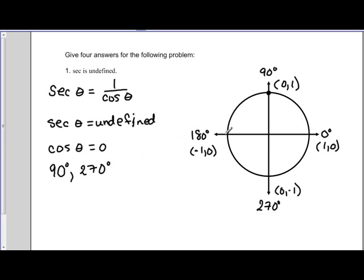Now zero and 180 do not have x values of zero, so they will not factor into our answer. So we only have two answers at the moment: 90 degrees and 270 degrees. We need two more.